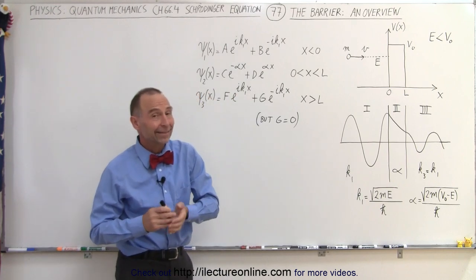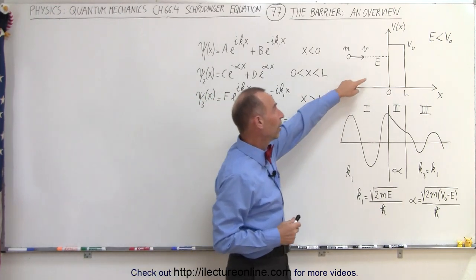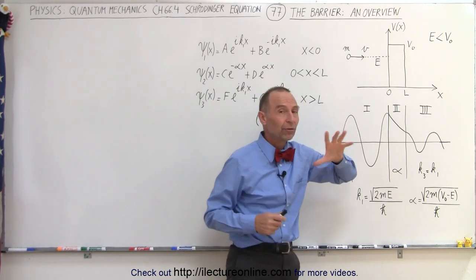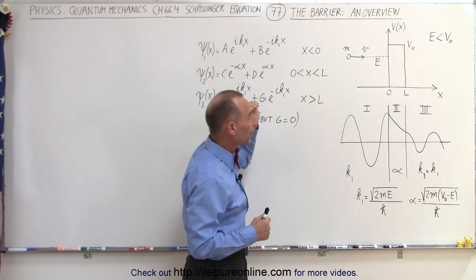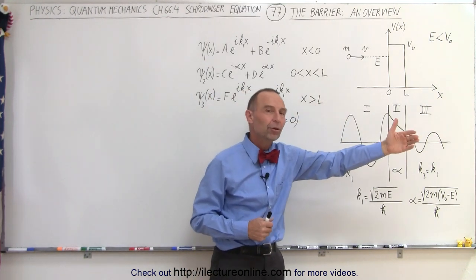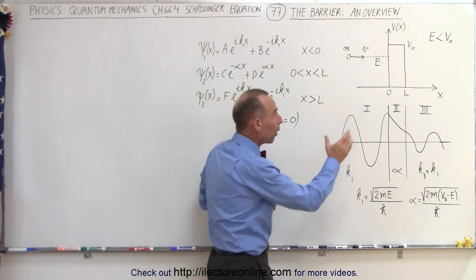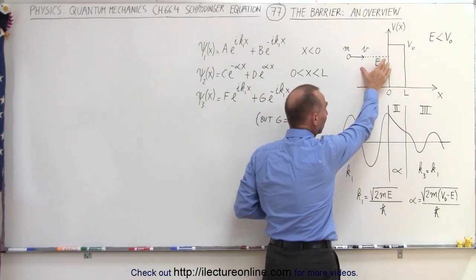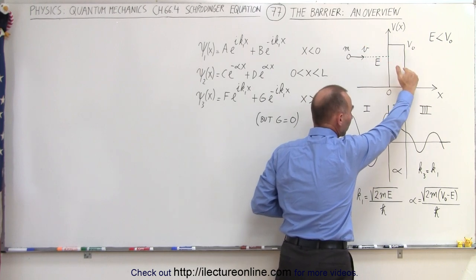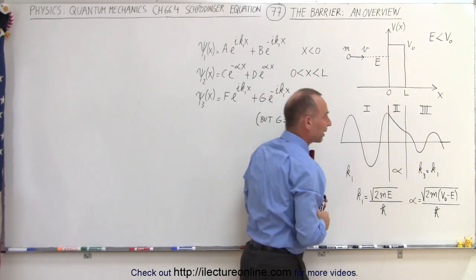But in quantum mechanics, that's not the case. Depending upon the relative size of the energy of the particle versus the potential of the barrier, we have some of the particles that will be reflected and some that will actually transfer into the barrier and continue on. And if the barrier isn't very wide and the particle has sufficient energy, it can actually tunnel through the barrier and continue on the other side as we've depicted right here.